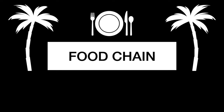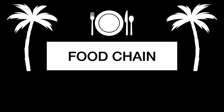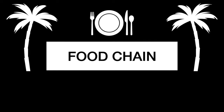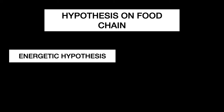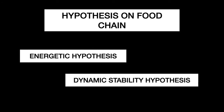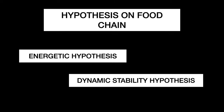Each level of a food chain represents a different trophic level, which we have already learned in our earlier classes. Now let's look at the hypotheses on food chain. There are two hypotheses: the energetic hypothesis and the dynamic stability hypothesis. The energetic hypothesis suggests that the length of a food chain is limited by the